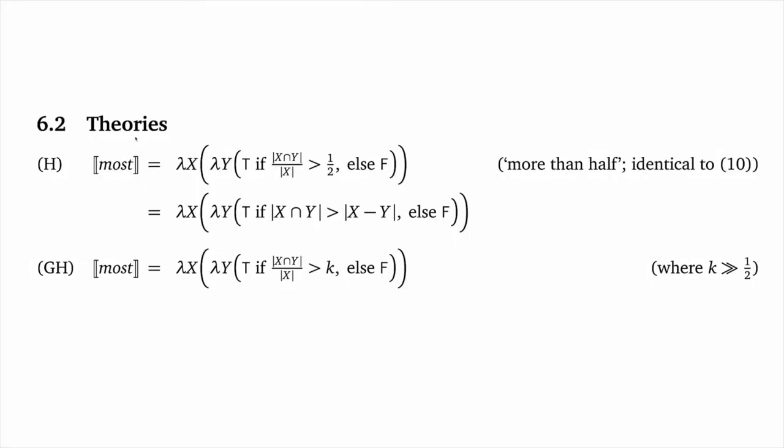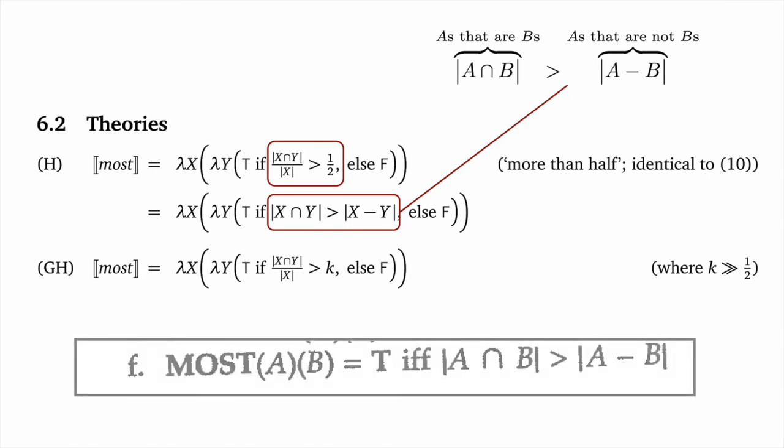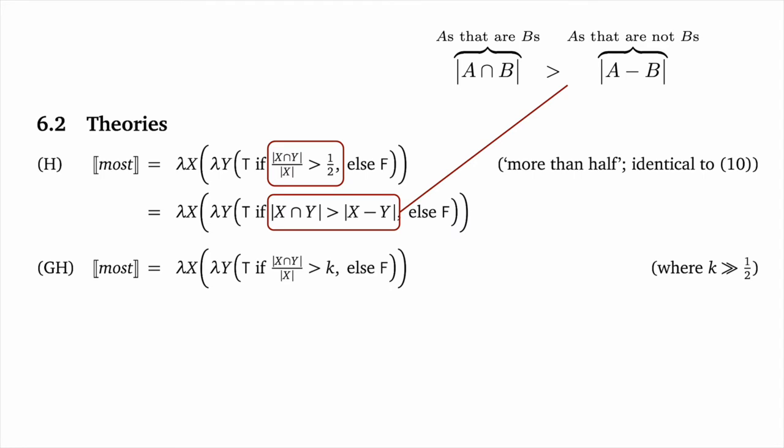So let's consider some theories of our own using our framework for defining determiner meanings. The meaning in H is the more than half meaning that I originally proposed, and I've given it in two essentially equivalent formulations. The first is an explicit proportion statement, and the second says that the A's that are B's outnumber the A's that are not B's. The second one is the one that you see in the Keenan article in his 4F, and I'd say these two formulations are identical except where A has no entities in it. In that case, the division in the first version would be undefined due to a divide by zero cardinality problem, whereas the second would come out straightforwardly false.